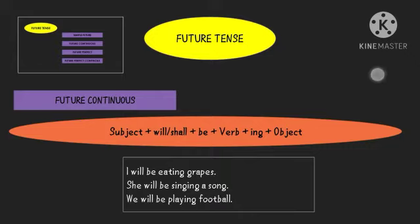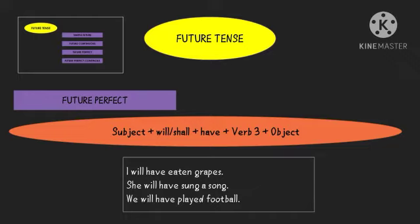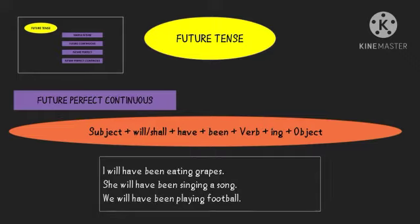Next we have future perfect tense, used to show an action that will have taken place definitely in the future. The formula is: subject + will/shall + have + verb (3rd form) + object. Sentences can be written like this: I will have eaten grapes, she will have sung the song, we will have played football.